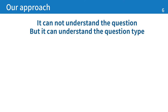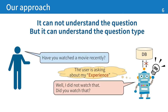How to make such a response? Our approach is based on question types. The system cannot understand the question content, but can understand the question type. The robot replies, 'Well, I did not watch that. Did you watch that?' instead of 'Sorry, I'm not sure.'